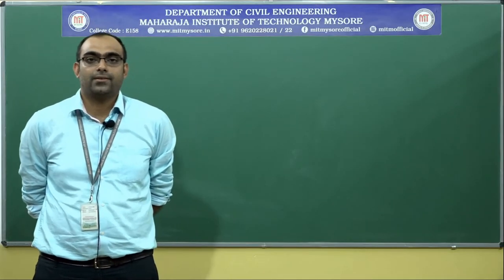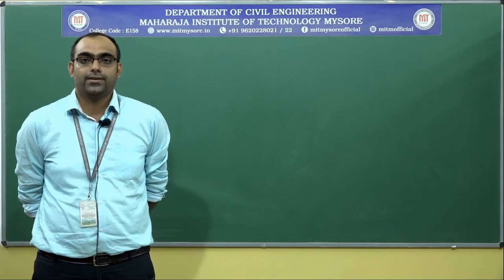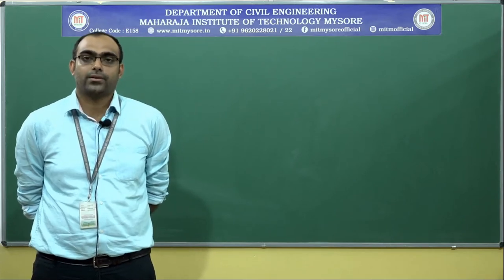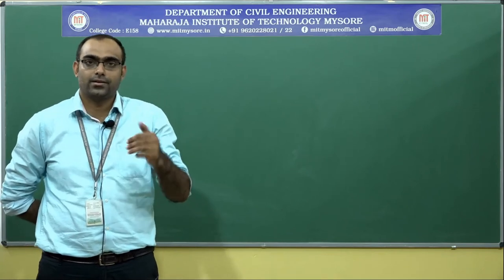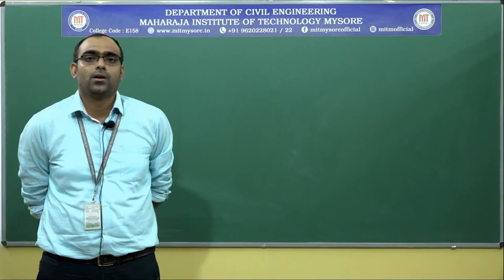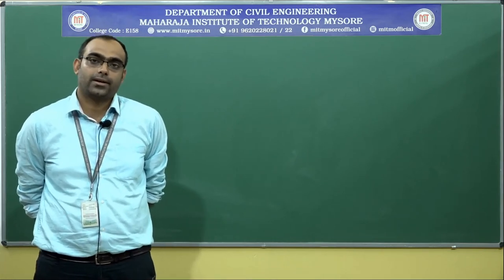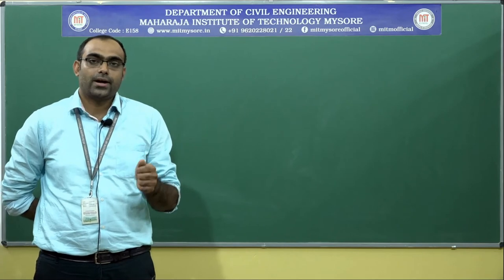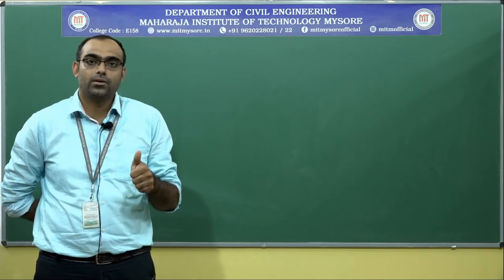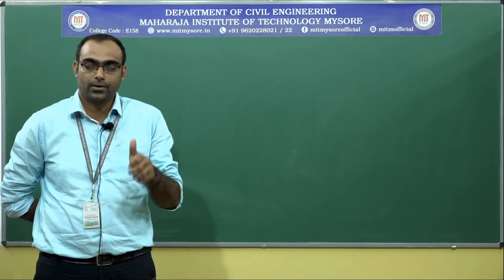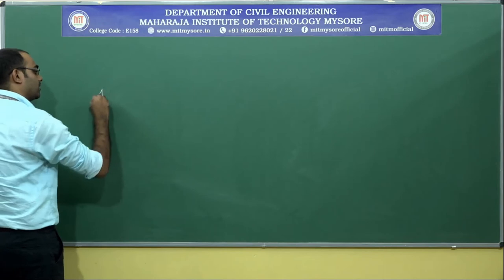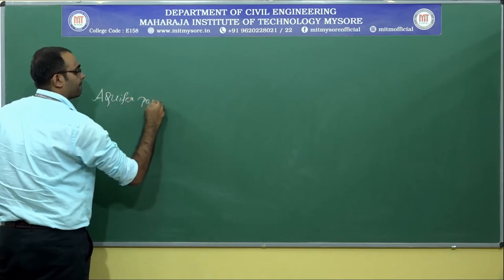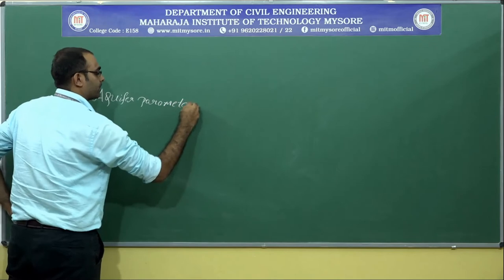Today we shall start with Module 2. The first topic is aquifer parameters. As discussed in previous classes, an aquifer is a geological formation which readily yields water and stores water — requiring good porosity for storage and good permeability for yielding. A parameter means a measurable factor, so aquifer parameters are the measurable factors of aquifers.